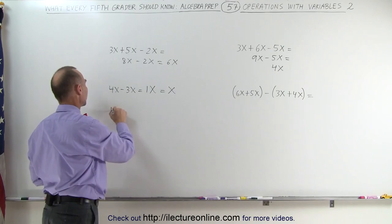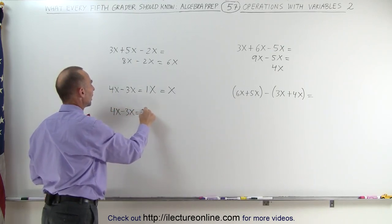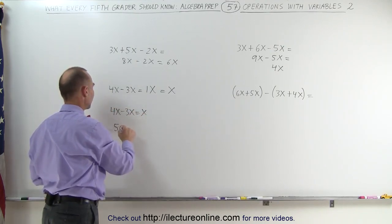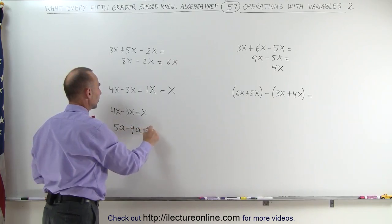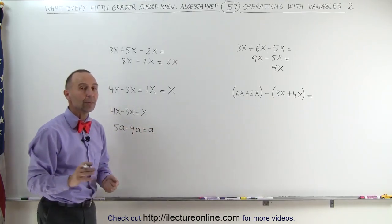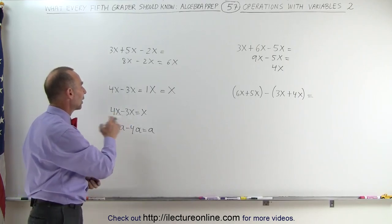In other words, when we write 4x minus 3x, this is simple x. Or, for example, 5a minus 4a, this is simply a. Anytime you end up with just one of them, you don't have to write the one in front.